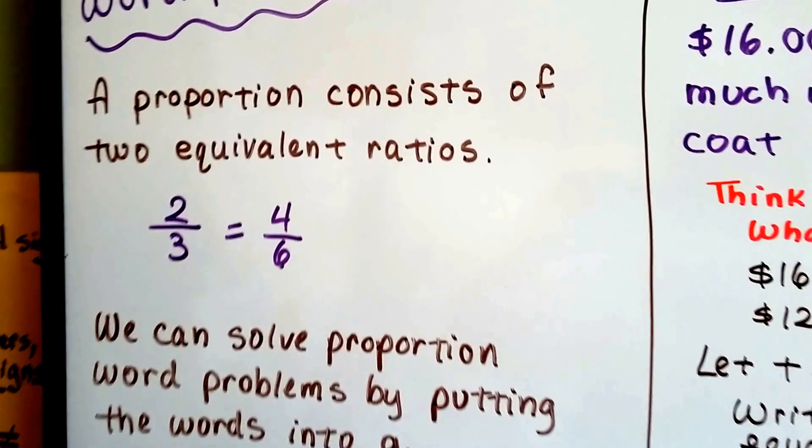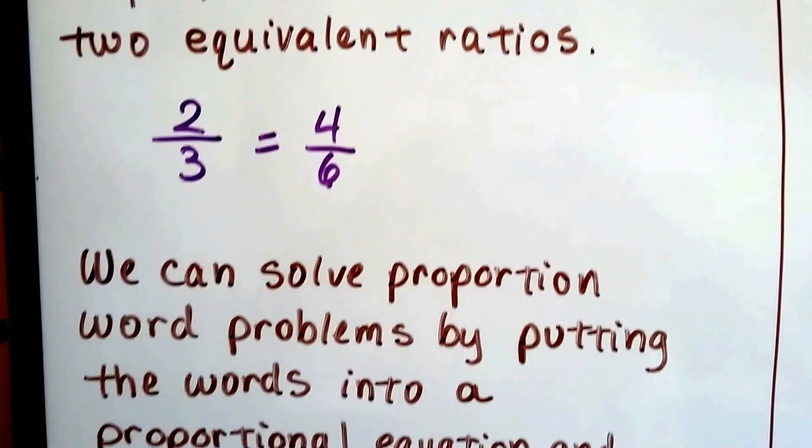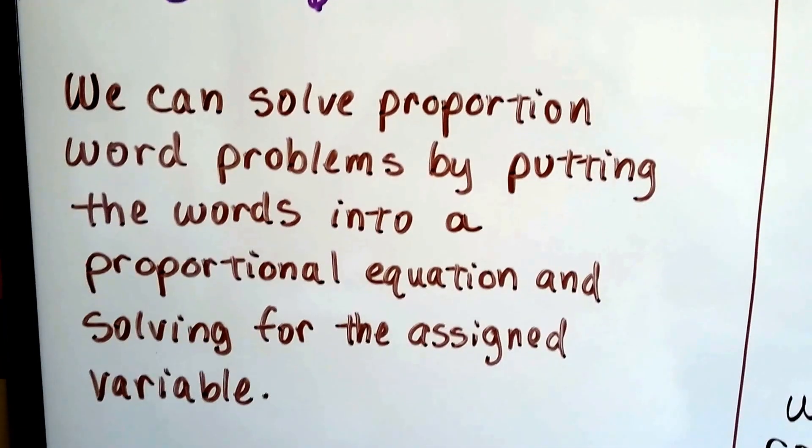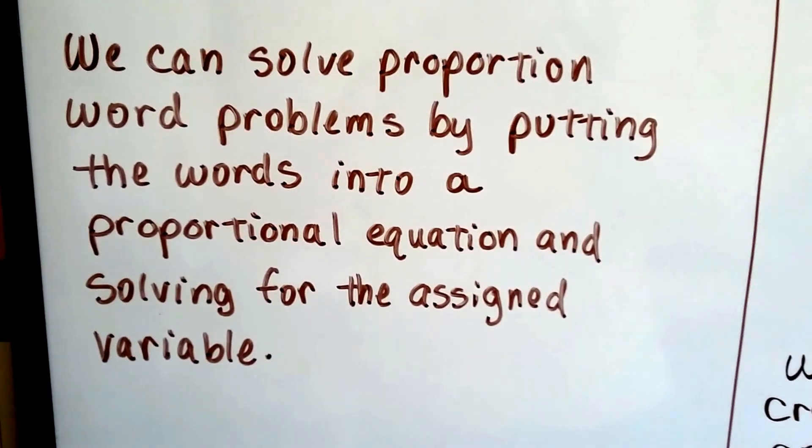A proportion consists of two equivalent ratios. Two-thirds equals four-sixths. We can solve proportion word problems by putting the words into a proportional equation and solving for the assigned variable.